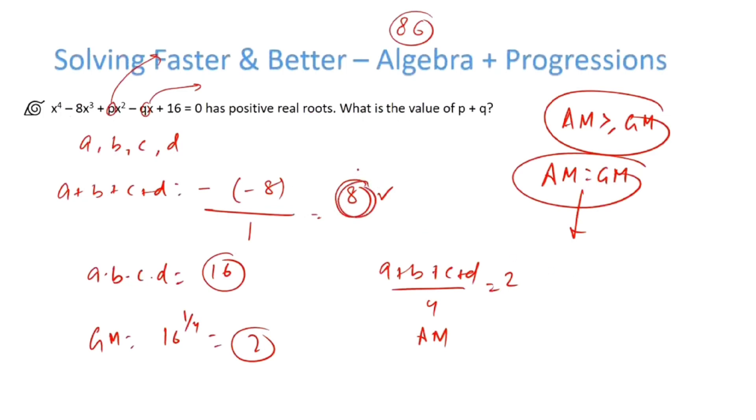If all the roots are equal and their sum is 8, then the roots must be equal to 2. So all four roots are 2.